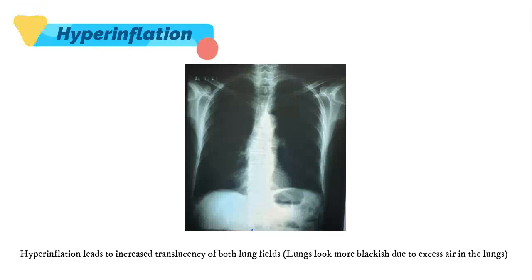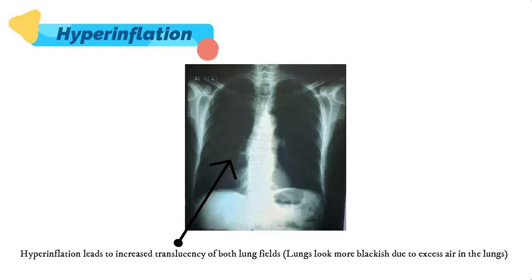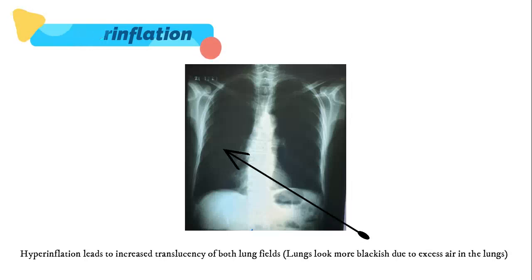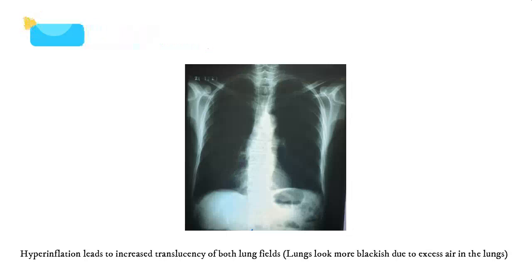Hyperinflation. This leads to increased translucency of both lung fields — that is, the lungs look more blackish due to excess air in the lungs.